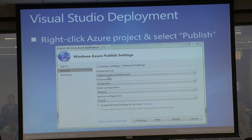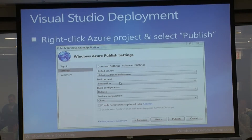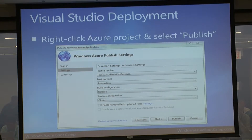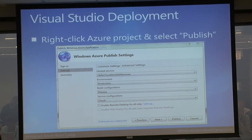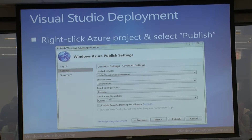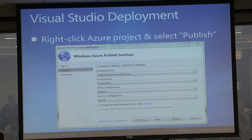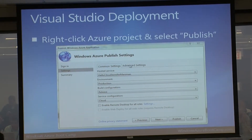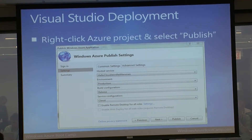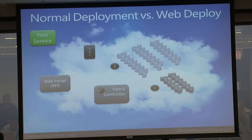First, sign in and point to the right subscription if you have multiple Azure subscriptions. Then set your settings - the service name, whether to push to production or staging first, build configuration for release or debug bits, and here's the web deploy option. You'd need to enable remote desktop first, then check the web deploy option. There are also advanced settings for your storage account.